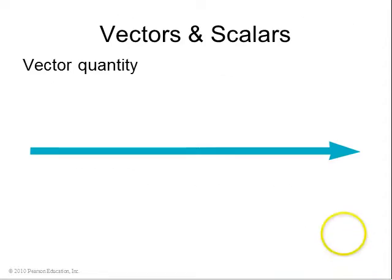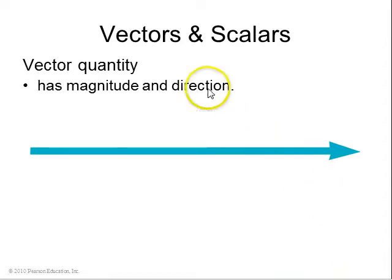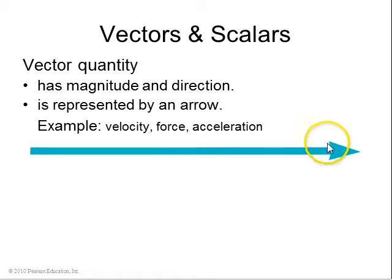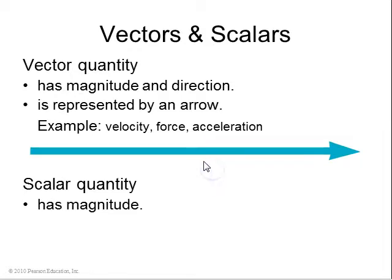I want to finish up Chapter 5 by talking about vectors. So there's two kinds of quantities: vectors and scalars. A vector quantity has magnitude and direction and can be represented by an arrow. Examples of vectors include velocity, force, and acceleration. A scalar quantity has a magnitude only. Examples of scalars are mass, volume, and speed.